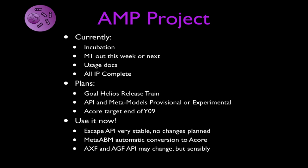The AMP project is an Eclipse incubation. The first milestone should be out this week — as I'm speaking, it's late November 2009. We've got pretty decent docs, we've just finished all of the IP, which for those familiar with the Eclipse IP process is a significant milestone. We're hoping to get on the Helios release train, and we're working hard at getting the ACOR target — this new version of the meta-model — out by year's end.